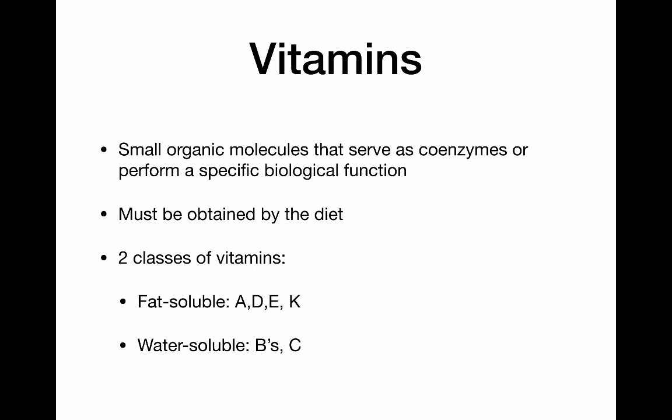A vitamin is a small organic molecule that serves as a coenzyme, or performs some specific biological function — most of which facilitate chemical reactions happening in the body. Our vitamins must be obtained from our diet because the body can't make them, with a few exceptions: the body can make a small amount of vitamin D, and vitamins K and B are made in the large intestine — really by the bacteria in the gut.